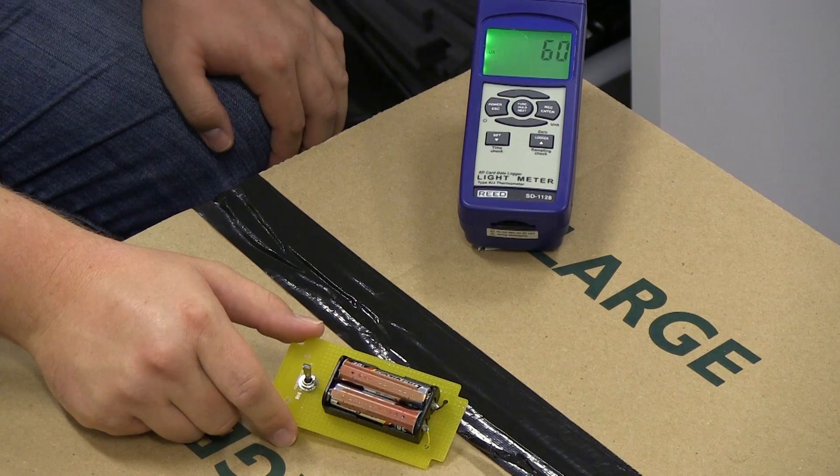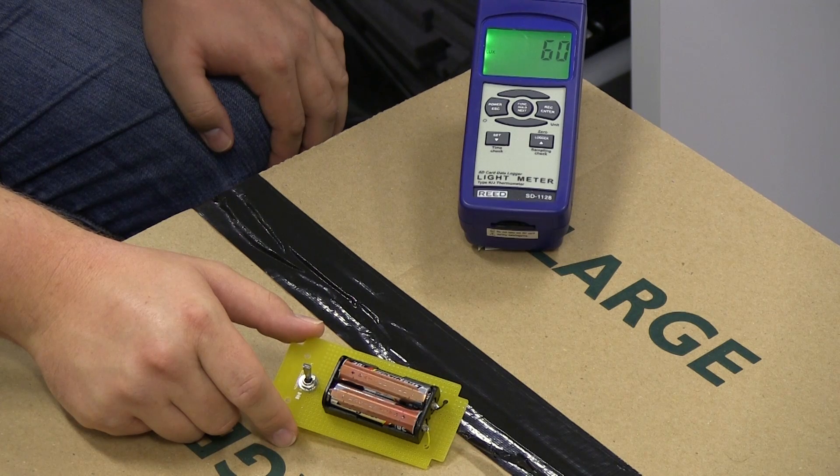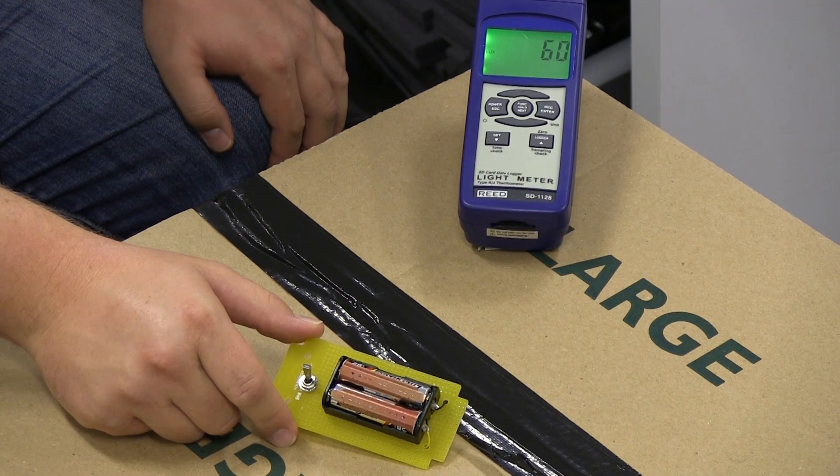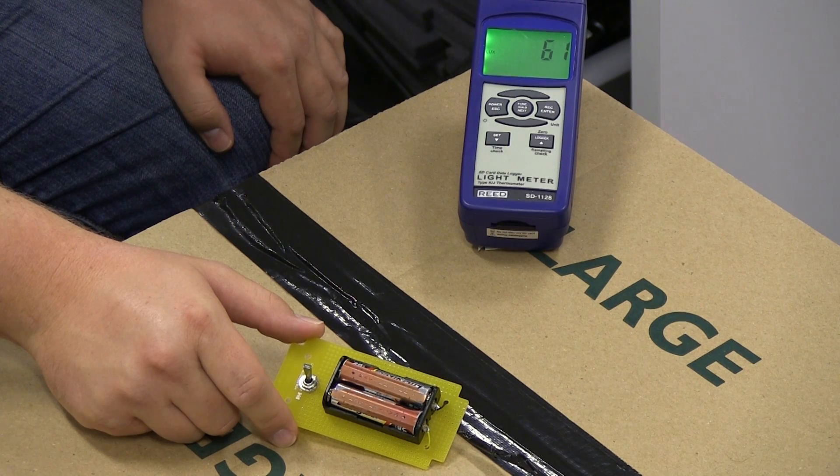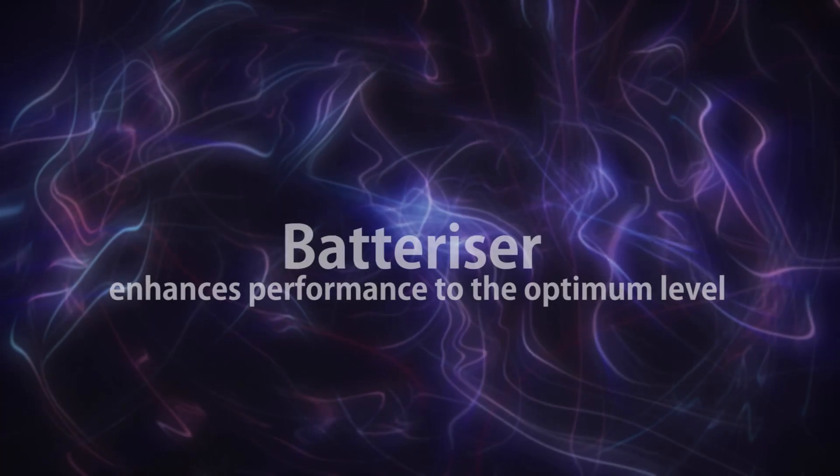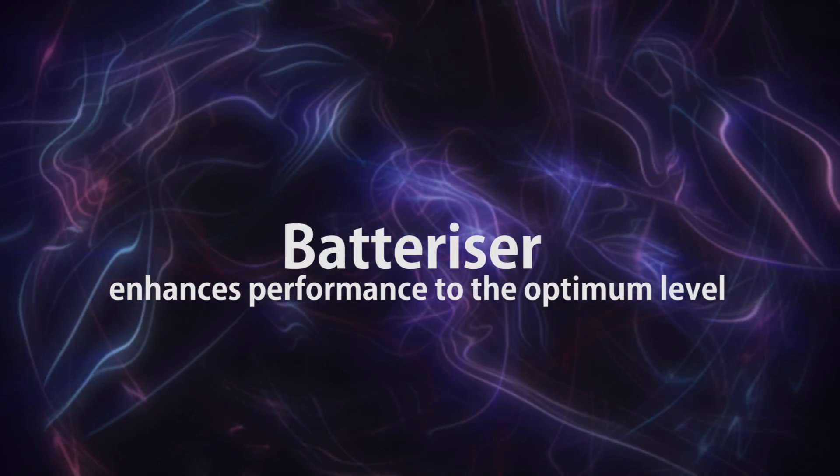The initial meter reading shows the same 60 lux brightness and stays the same throughout the entire duration of the two hour test. Batterizer enhances performance to the optimum level.